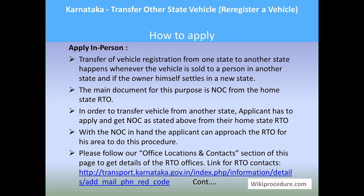Let us see how to apply in person. Transfer of vehicle registration from one state to another happens whenever the vehicle is sold to a person in another state, or when the owner himself moves to a new state. The main document for this purpose is the NOC from the home-state RTO. The NOC gives clarification that the new RTO can register the vehicle. To transfer a vehicle from another state, the applicant must apply and obtain the NOC from their home-state RTO, clearing any dues or taxes. With the NOC in hand, the applicant can approach the local RTO to proceed.